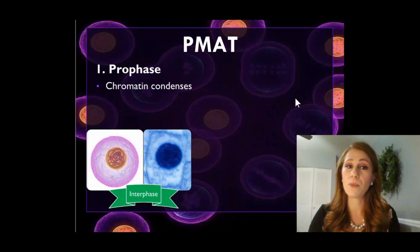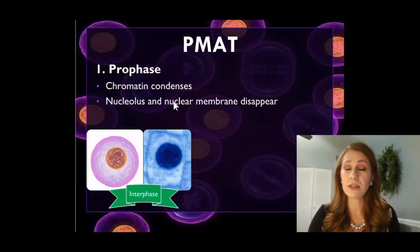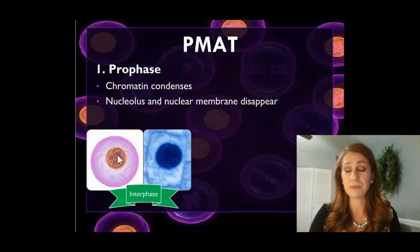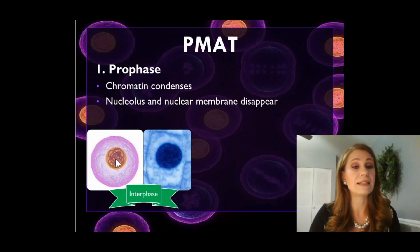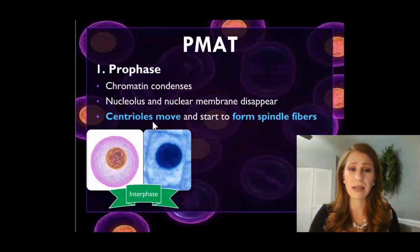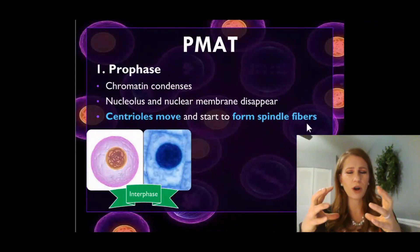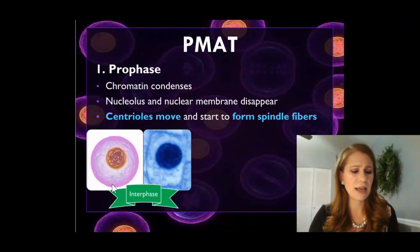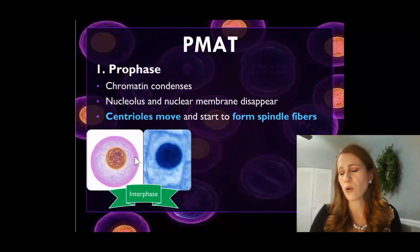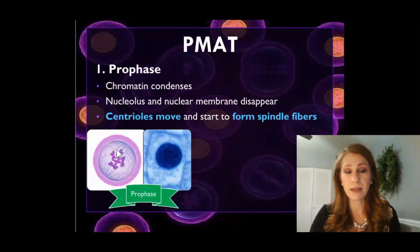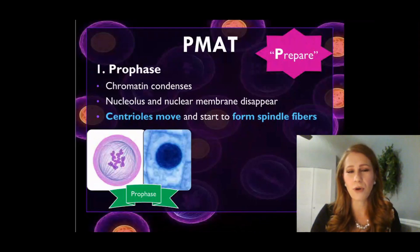In prophase, the first thing that happens is that chromatin condenses into chromosomes — we take that slightly coiled chromatin and super coil it. The nucleolus and the nuclear membrane also disappear; that barrier has to be gone in order for the DNA to split and separate during mitosis. The last thing that happens in prophase is that the centrioles move to opposite parts of the cell and start to form spindle fibers, which make the framework for mitosis. The keyword for prophase is prepare.